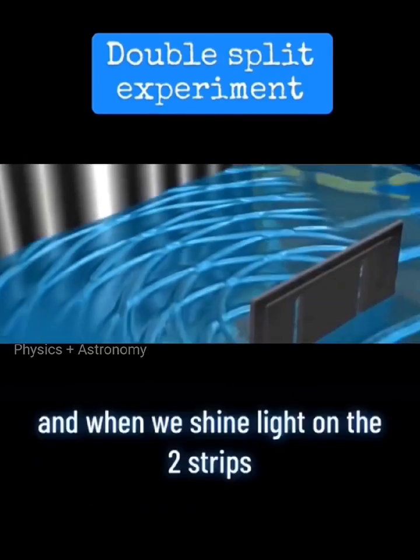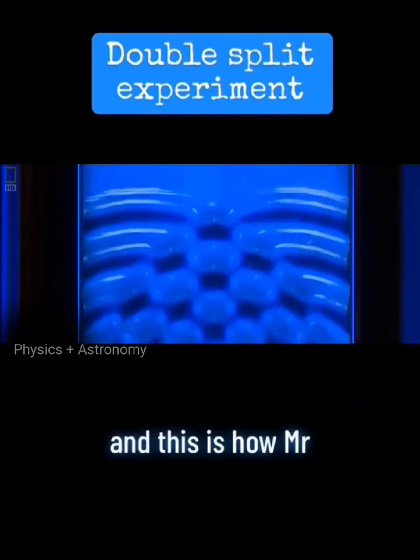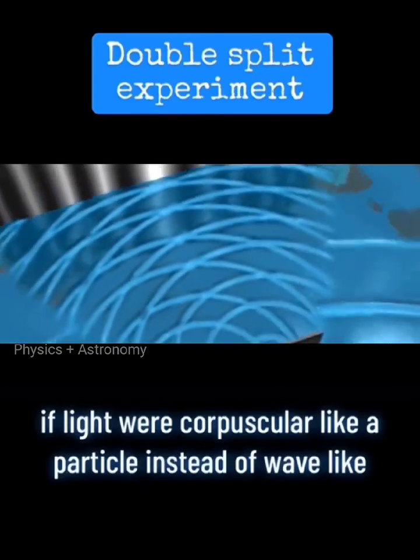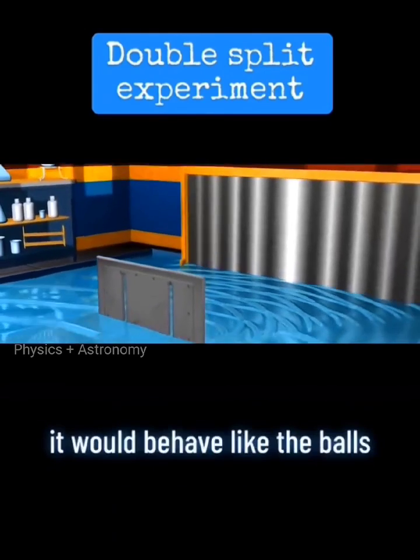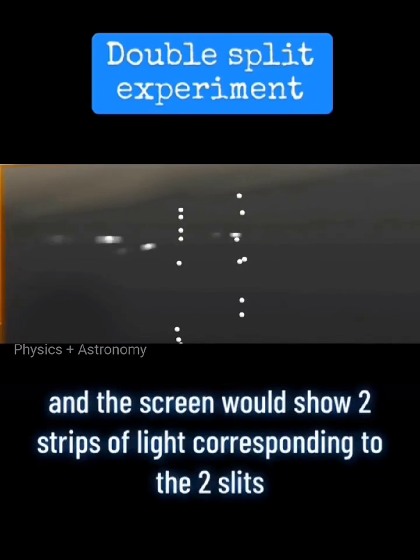And when we shine light on the two strips, this is exactly what happens. And this is how Mr. Young proved the wave theory of light. If light were corpuscular, like a particle, instead of wave-like, it would behave like the balls and the screen would show two strips of light corresponding to the two slits. That didn't happen.